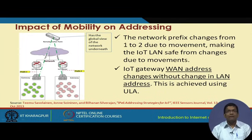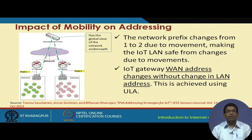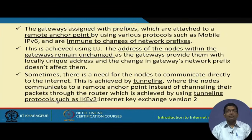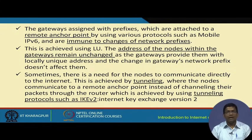There is the concept of the remote anchor point, which is the entity that has the global view of the entire network — comprising the LANs, the VAN, the gateways, the routers, and so on. If there is a change in the network prefix, it can be taken care of automatically, and technologies or protocols such as Mobile IPv6 can be helpful in these scenarios, assuming that IPv6-based addressing is being used.